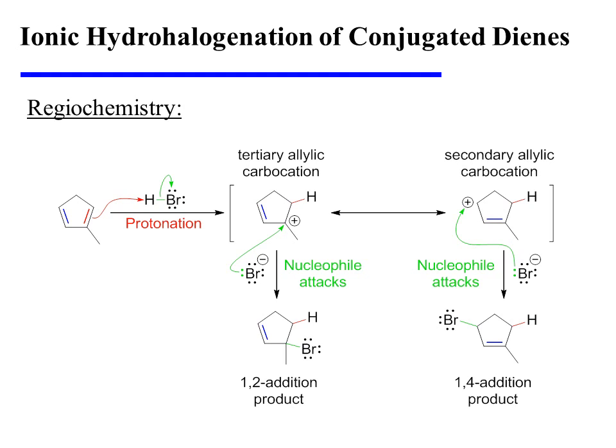When an unsymmetrical methyl cyclopentadiene substrate is used, protonation of the red and blue pi bonds would afford different carbocations. Let's first consider the protonation of the red pi bond.